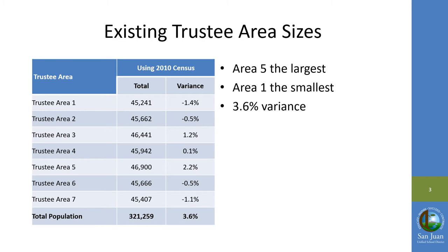The trustee areas adopted this summer provided for a balance of registered voters as required by the law. You can see here that the total variation, or the difference, between the largest trustee area and the smallest trustee area was 3.6 percent.